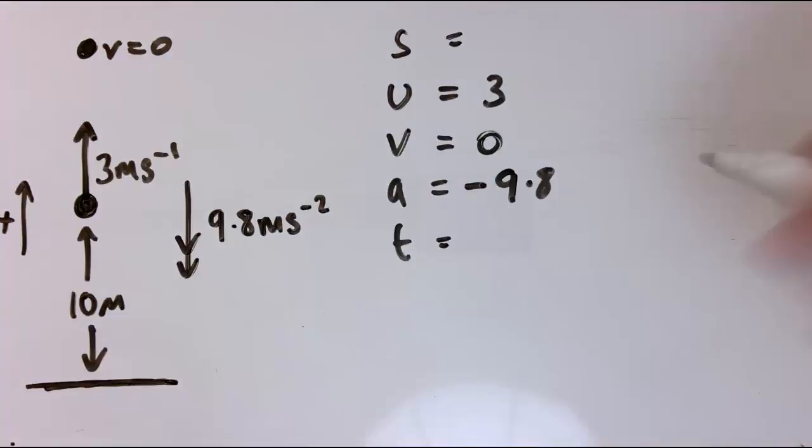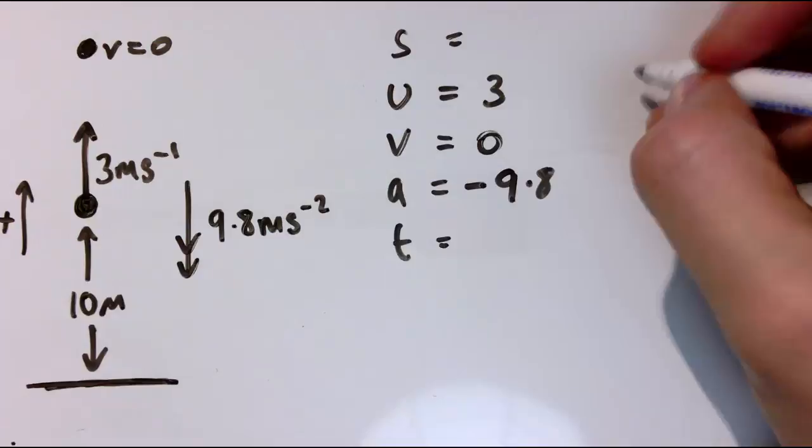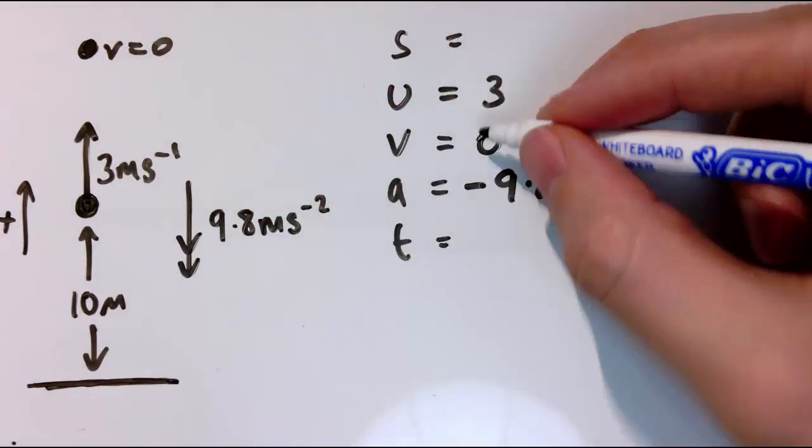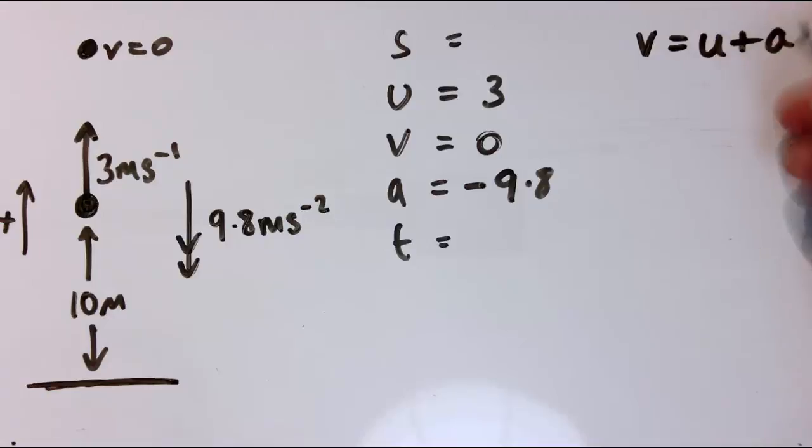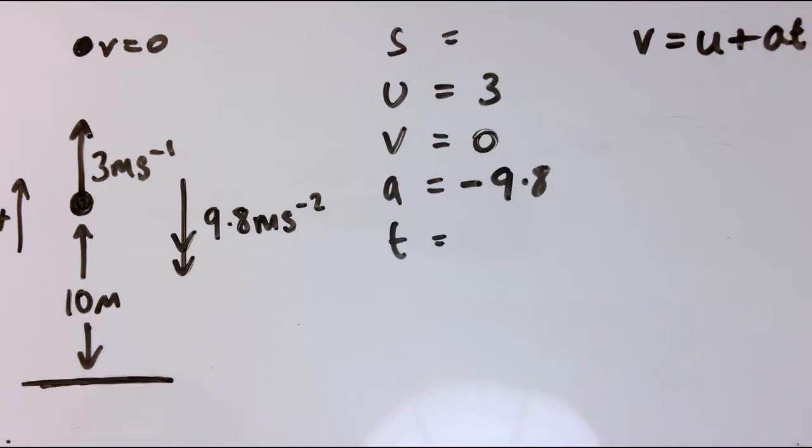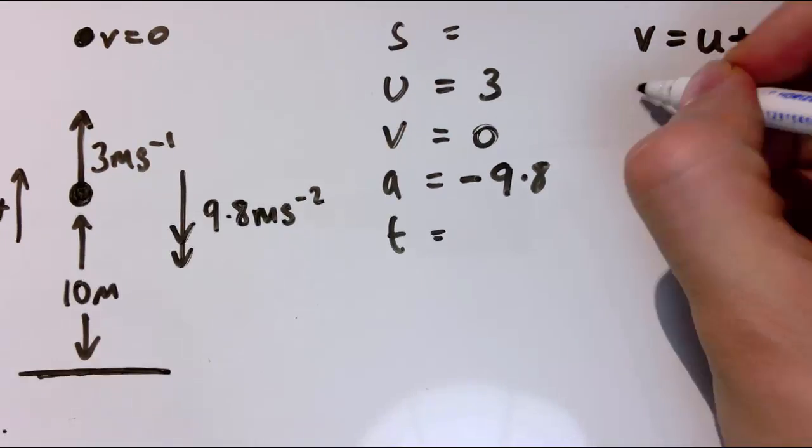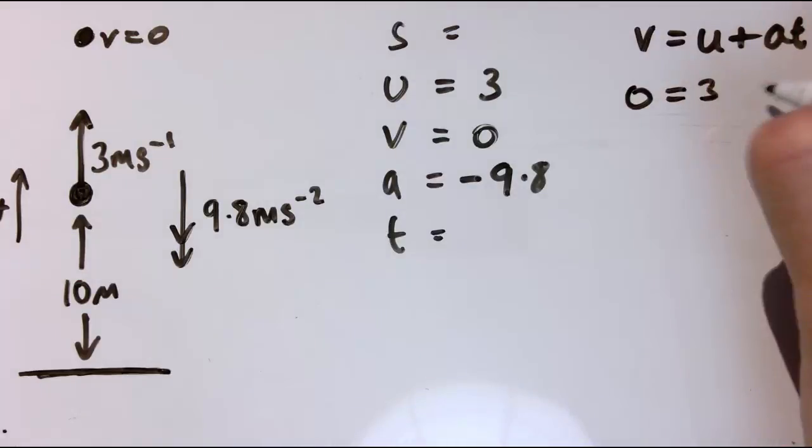So let's get the time first. We've got U, V, and A, and we want T, so that one is V equals U plus A times T. So V is zero, U is three, A is minus 9.8, and T is what I'm trying to work out.